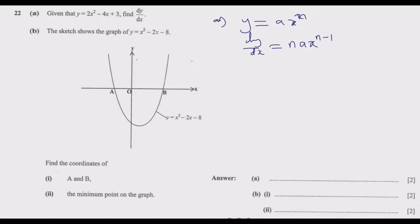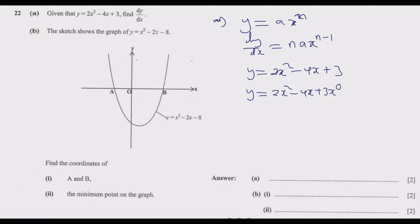Based on that, we have y equals 2x squared minus 4x plus 3. This is the same as y equals 2x squared minus 4x plus 3x to the power 0, because anything to the power 0 is 1, and 1 times 3 is 3. Based on that we can now differentiate to find dy/dx.